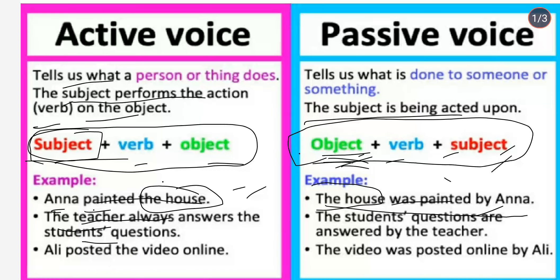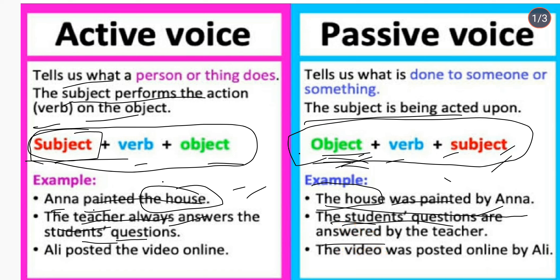Next example: 'The teacher always answers the student's questions.' Here, the teacher is the subject, always answers is the verb, and the student's questions is the object. In passive form: 'The student's questions are always answered by the teacher.' Here, the student's questions is the object, are answered is the verb, and by the teacher is the subject.